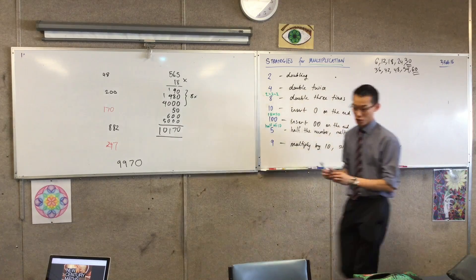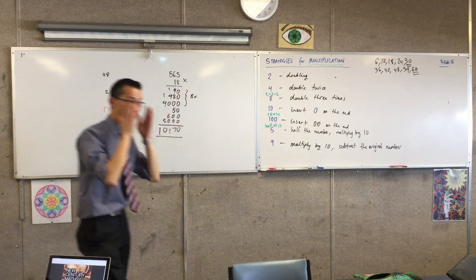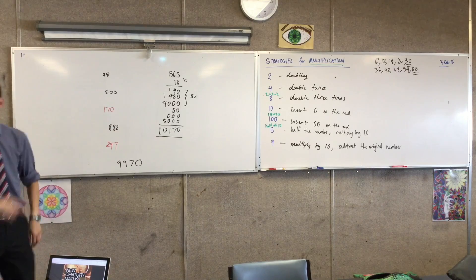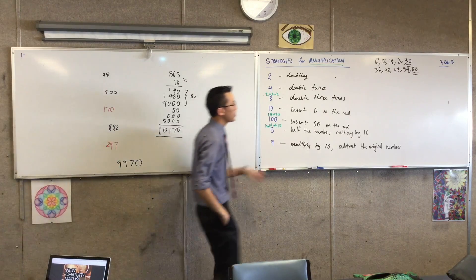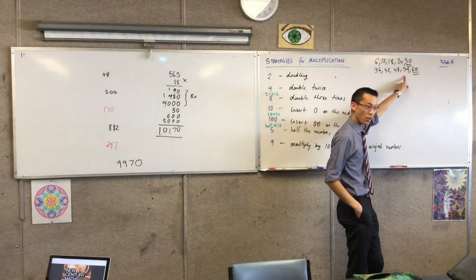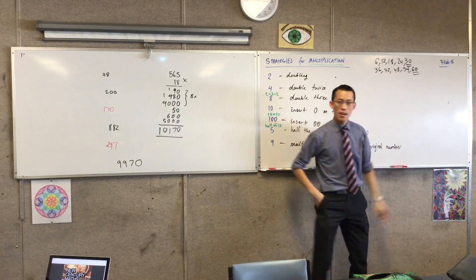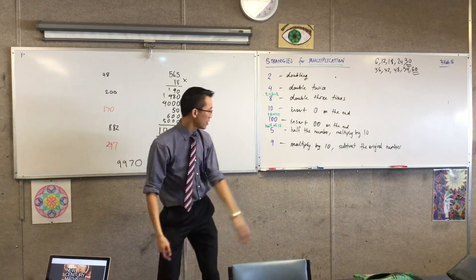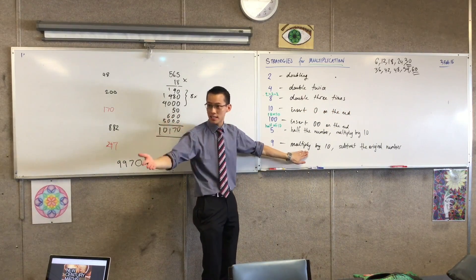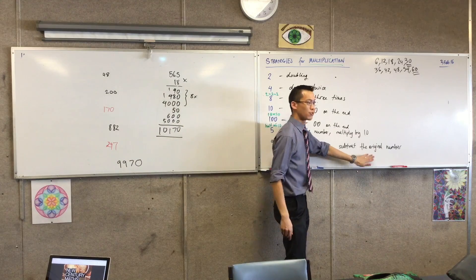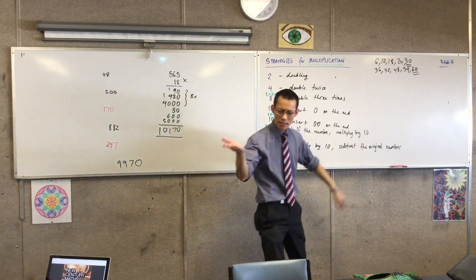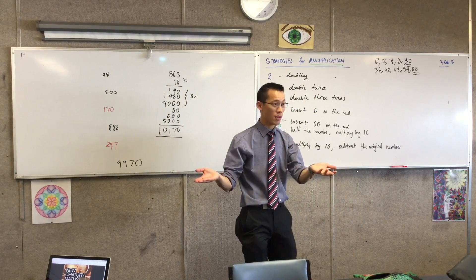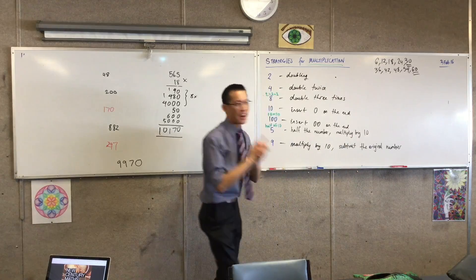Now, just before I show you how this works, let's just confirm that it actually does work. We were working with 6 before, weren't we? Now, you already know what 6 times 9 is. I've written it on the board, 54. You insert the 0 on the end, which is the first step. That gets you to 60. And then you subtract the original number, 6. 60 take away 6. Does it work? Yeah. It does work, right?